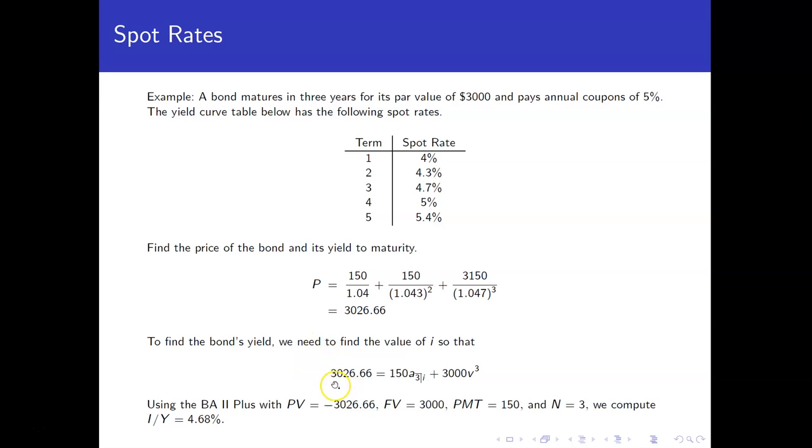We have the present value, or the price, of $3,026.66. We've got an annuity, essentially a level annuity, that is the coupons. We've got three of those at an unknown interest rate. And we have also the $3,000 redemption value that needs to be discounted back to time 0. And again, we don't know what I is.